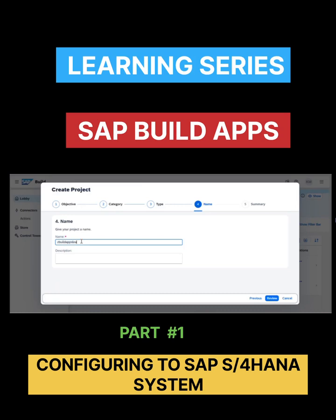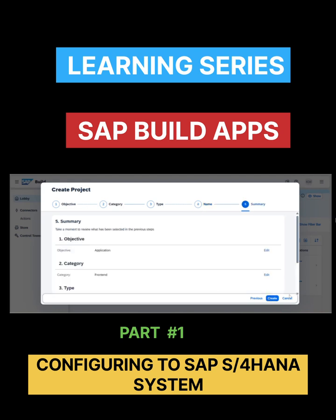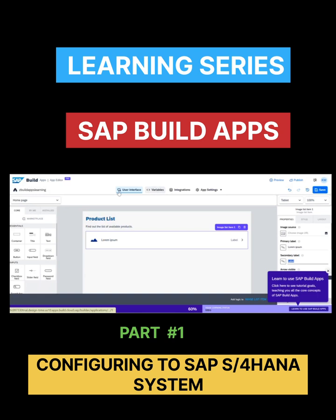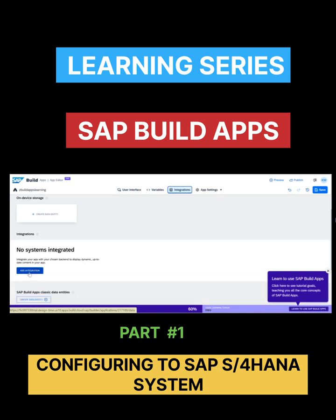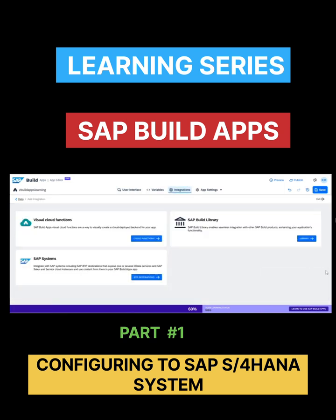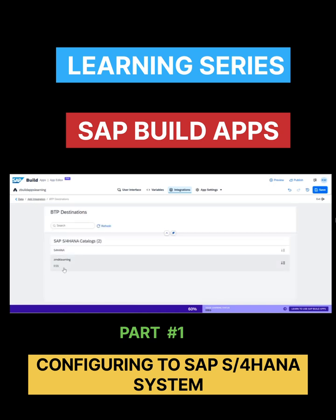Build apps learning. Click on review and click on create. As I said, the user interface variable is for variables, and integration is for my data. I'll go and select an add integration. This time I'll select a SAP BTP system destinations, and you can see I got S4 HANA and MDK. I'll click on my S4 HANA.